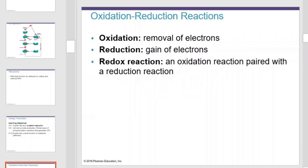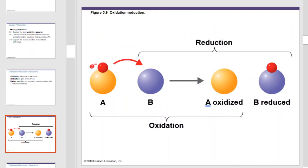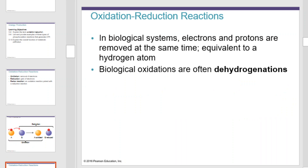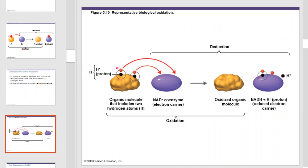To begin looking at energy production, we must first examine oxidation-reduction reactions. An oxidation reaction removes electrons. A reduction reaction is one where reactants will gain electrons. Put these together and we have what's called a redox reaction — an oxidation reaction paired with a reduction reaction. In biological systems, electrons and protons are removed at the same time, equivalent to a hydrogen atom. Biological oxidations are often dehydrogenations.